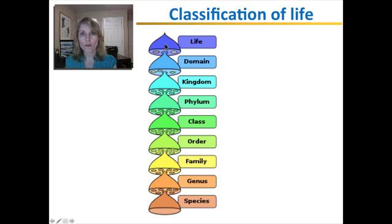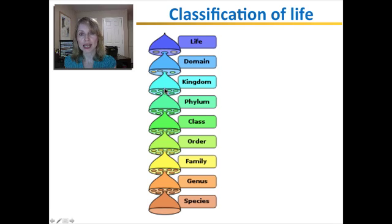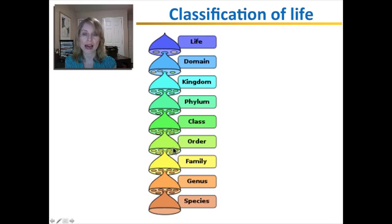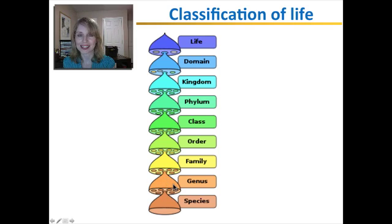All of life can be separated into three domains. Each domain is separated into multiple kingdoms, each kingdom has multiple phyla, each phylum has multiple classes, each class has multiple orders, each order has multiple families, each family has multiple genuses, and each genus has multiple species.